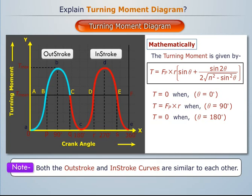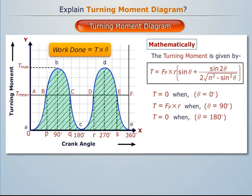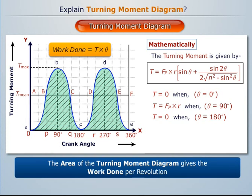Note that both the out-stroke and in-stroke curves are similar to each other. Since the work done is the product of the turning moment and the angle turned, the area of the turning moment diagram gives the work done per revolution.